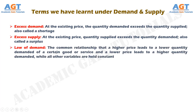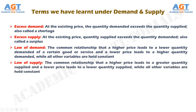The law of demand states the common relationship that a higher price leads to a lower quantity demanded of a certain good or service, and a lower price leads to a higher quantity demanded, while all other variables are held constant. The law of supply is the common relationship that a higher price leads to a greater quantity supplied and a lower price leads to a lower quantity supplied, while all other variables are held constant.